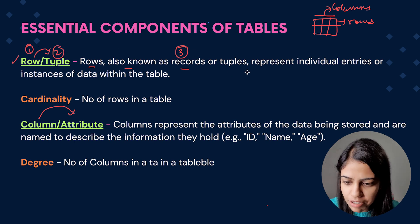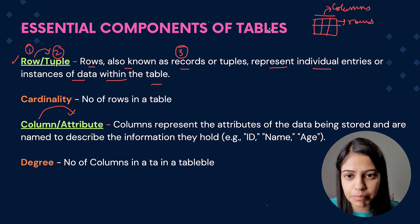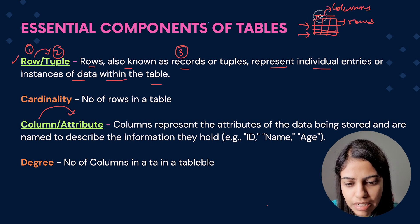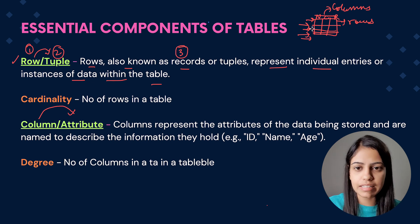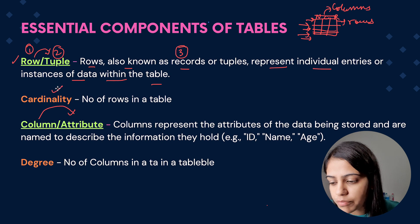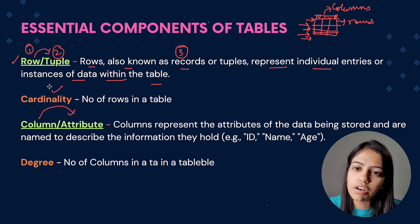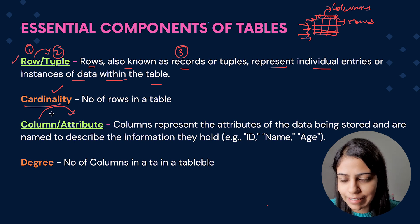Rows are also known as records or tuples, and they represent individual entries or instances of data within the table. Basically, if we are inserting individual entries for some particular columns — like name, class, roll number — the place where we give those individual entries in the table is a row. There is one more term which can be asked in your online assessments or semester exams because people tend to forget the name 'tuple' for row. That term is cardinality — the number of rows in a table is called cardinality.